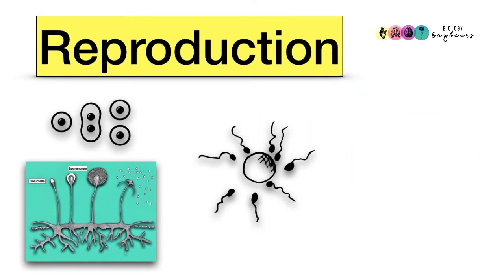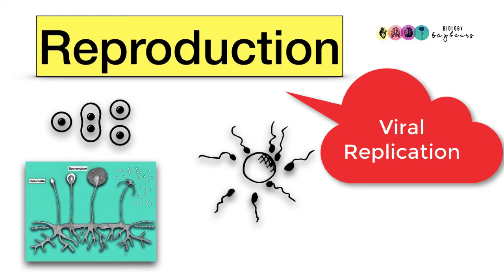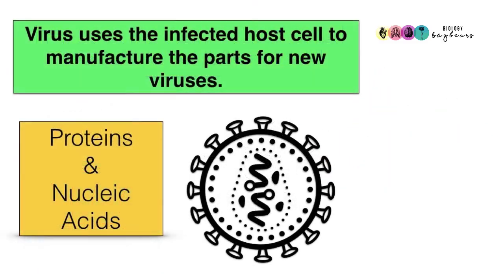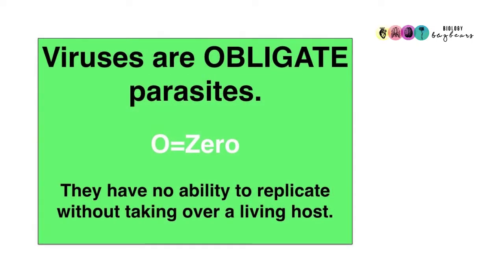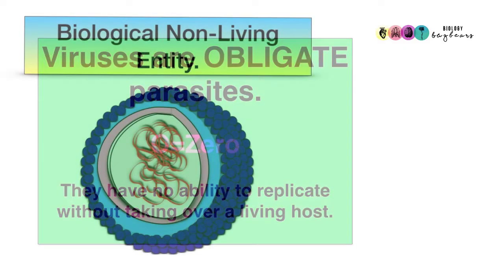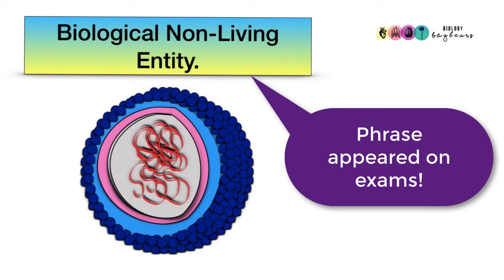Finally, we have reproduction. We don't really say that viruses reproduce. We talk about viral replication because they use all of the host cell to manufacture the new parts for the new viruses. So viruses are classed as obligate parasites—O meaning zero. They can't do anything unless they infect a living host. Perhaps it's better to state that viruses are biological non-living entities.